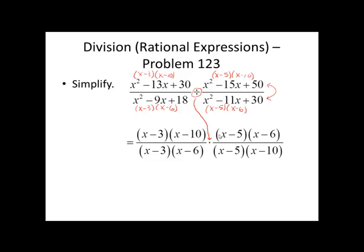Time to start reducing common factors. x minus 3, x minus 10, x minus 5, and x minus 6. Everything divides out here, leaving us with a group of 1's in the numerator and denominator. Multiplying straight across, that leaves us with a result of 1.